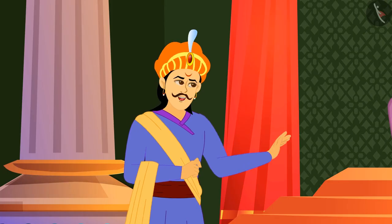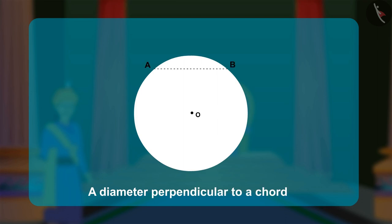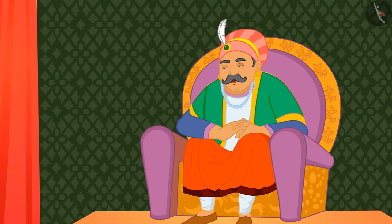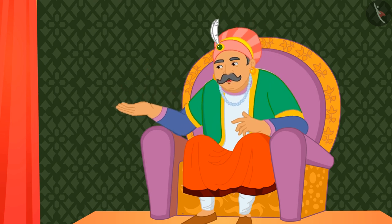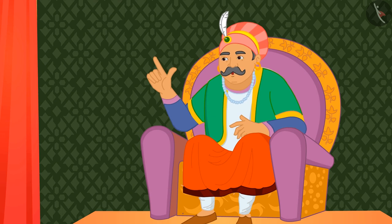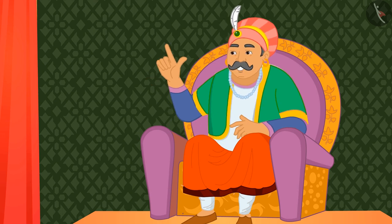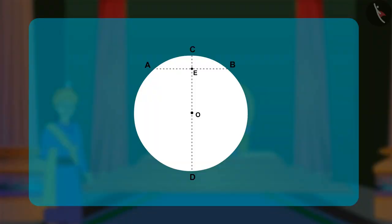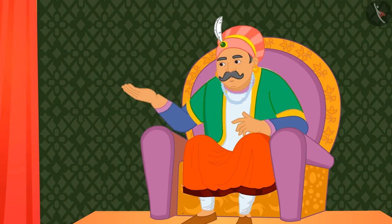'Let me show you,' Birbal said. He folds a chord AB and then folds a diameter CD perpendicular to this chord. 'If I compare the segments AE and EB of the given chord, how will you prove that they are congruent?' asked Akbar. Birbal explained, 'In this circle, if I fold the paper through point E, we will find the segments AE and EB are equidistant from the center. In the same circle or congruent circles, two chords are congruent if and only if they are equidistant from the center.'